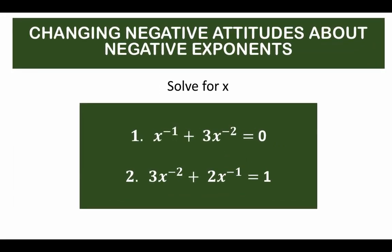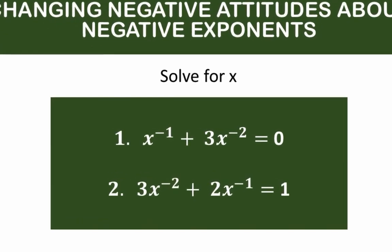Hi everyone, I'm your AI assistant here for our math problems of the day. What we have here are two equations involving negative exponents. The first one is: solve for x, given the equation x raised to negative 1 plus 3x raised to negative 2 is equal to 0. And the second one is: 3x raised to negative 2 plus 2x raised to negative 1 equals positive 1.